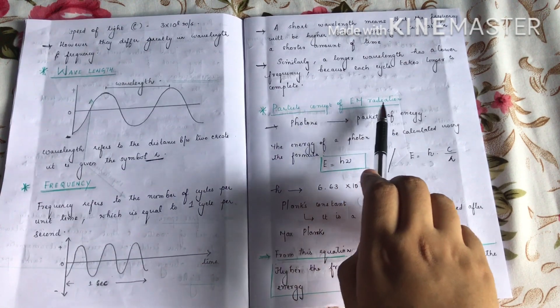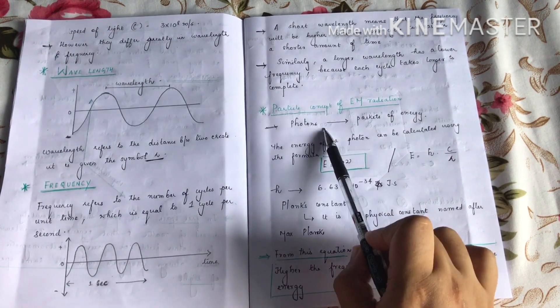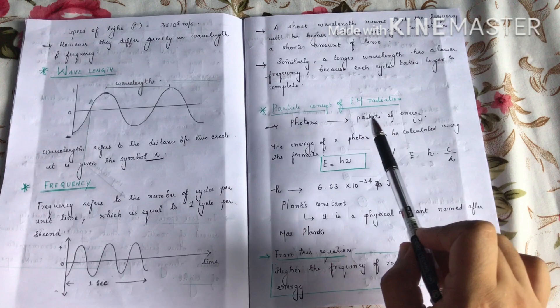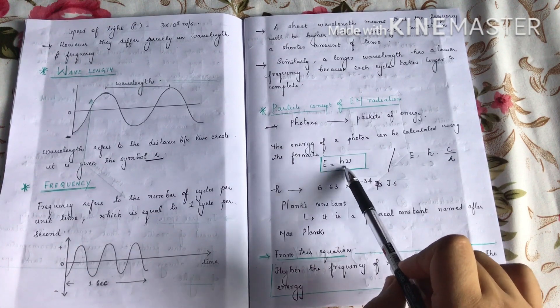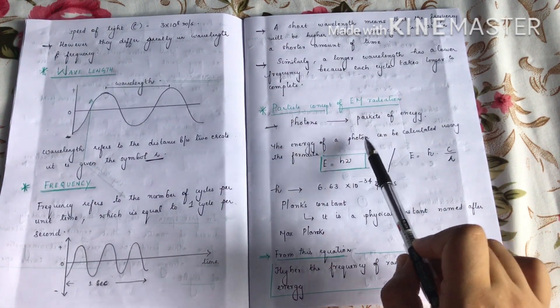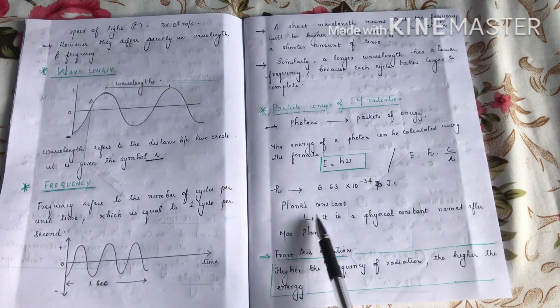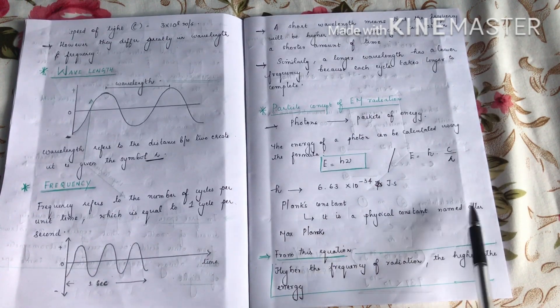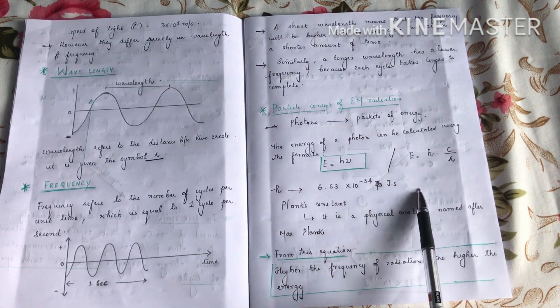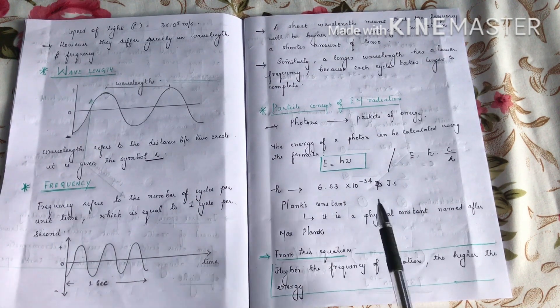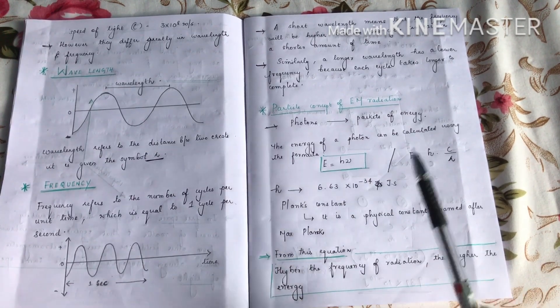Second is the particle concept of electromagnetic radiation. Particles are called photons. Photons are packets of energy. Energy of a photon is calculated using the formula E equals h nu. E is energy, h is Planck's constant, a physical constant named after Max Planck, and the value is 6.63 times 10 raised to minus 34 joule second. Nu is frequency. So if higher the frequency, then higher the energy.